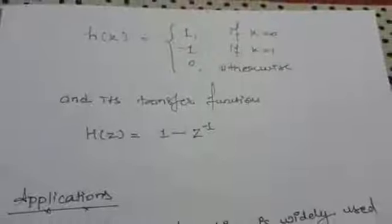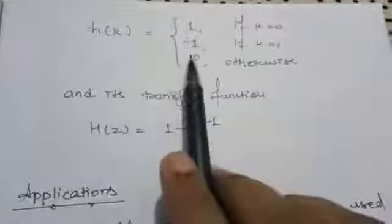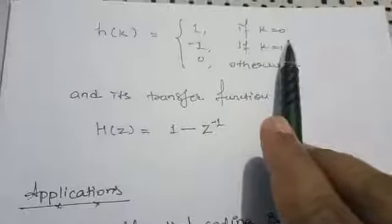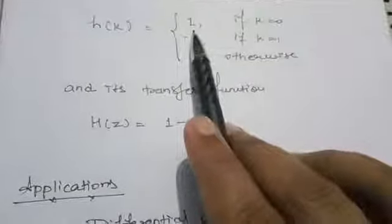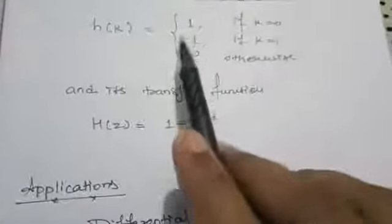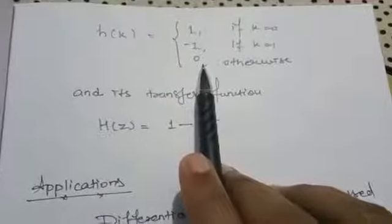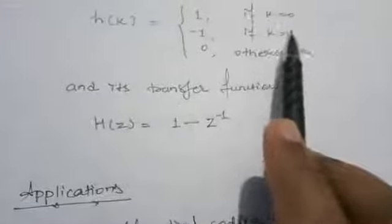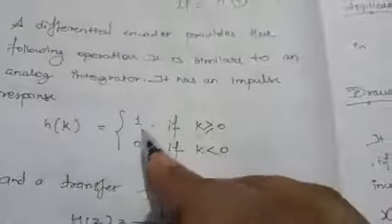For the differential decoder, there are three impulse response values: 1, −1, and 0. If k equals 0, the impulse response is 1; if k equals 1, it is −1; otherwise it is 0. A major difference here is that when k=1 we get −1, meaning we calculate the difference. The transfer function is H(z) = 1 − z^−1.